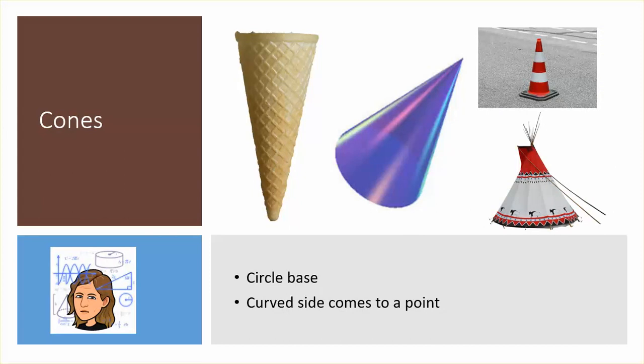If we only have one circle as the base, that would form a cone. In a cone, the side is curved but it comes to a point at the top or across from the circle.